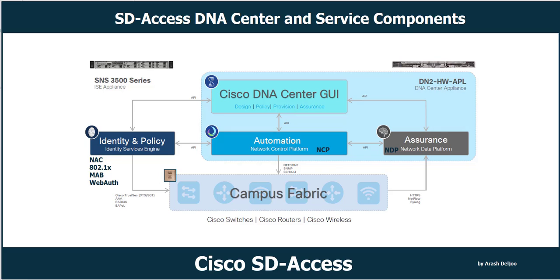ISE also collects and uses contextual information shared from NDP, NCP, and other systems such as Active Directory or cloud services like AWS. ISE then places the profiled endpoint into the correct Scalable Group and host pool. It uses this information to provide data back to NCP and NDP, so the user in the management layer — Cisco DNA Center GUI — can create and manage group-based policies. ISE is also responsible for programming group-based policies on the network layer.